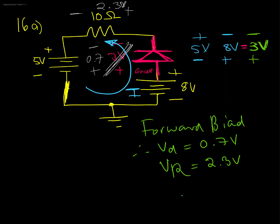And that current we could calculate as VR divided by the resistance, so that's going to be 2.3 volts divided by 10 ohms which would be 0.23 amps. So that is what would happen if we had flipped the diode around.